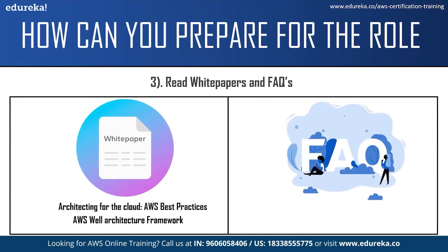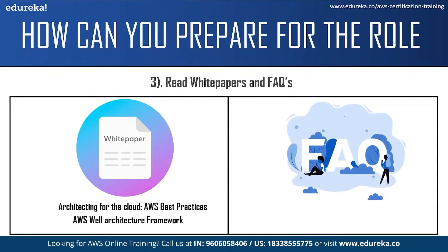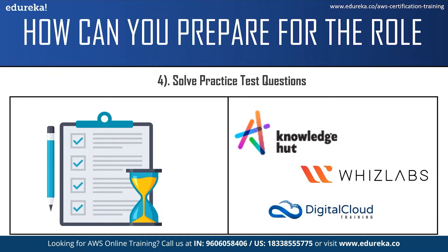Moving on to the next step: referring to white papers and frequently asked questions. White papers will give you technical knowledge about various AWS concepts and services. Two of the best white papers for the certification are 'Architecting for the Cloud: AWS Best Practices' and the 'AWS Well-Architected Framework.' The frequently asked questions will help you clear your doubts. You can also practice by solving practice test questions on websites such as Whizlabs and Digital Cloud Training.